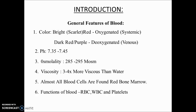Let's first learn the basic physiology of blood. For NEET MDS, your basics should be very strong. You should at least know the basic features of blood. The color of blood: oxygenated blood is pure blood and is scarlet red in color, whereas deoxygenated blood is dark red or purple. Blood has an almost neutral pH of around 7.3 to 7.4, osmolality of around 285 to 295 milliosmol. Blood is more viscous than water, and almost all blood cells are found in the bone marrow.